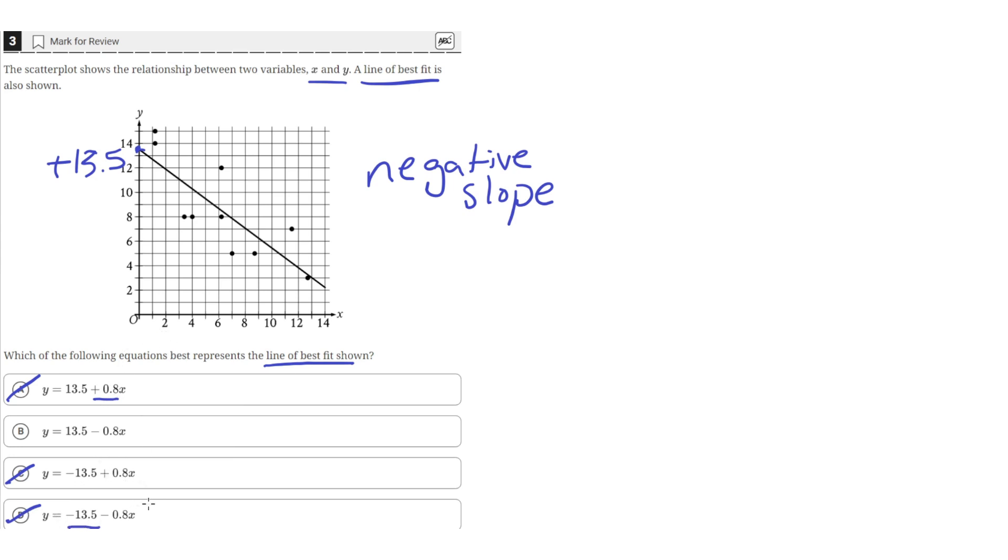Negative 13.5 is down in the negative y-axis. If we were to continue this line down, it would be way down here. So B is correct. It has the correct y-intercept and the correct negative slope.